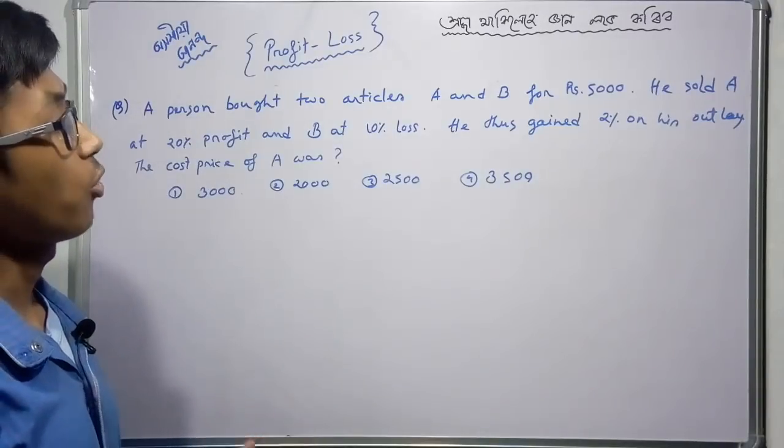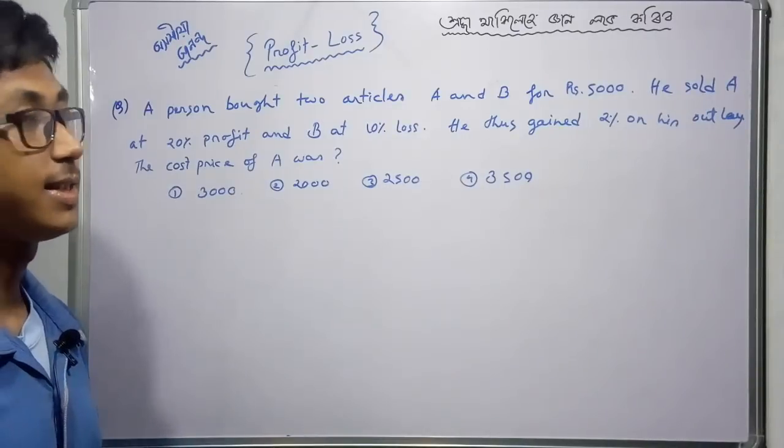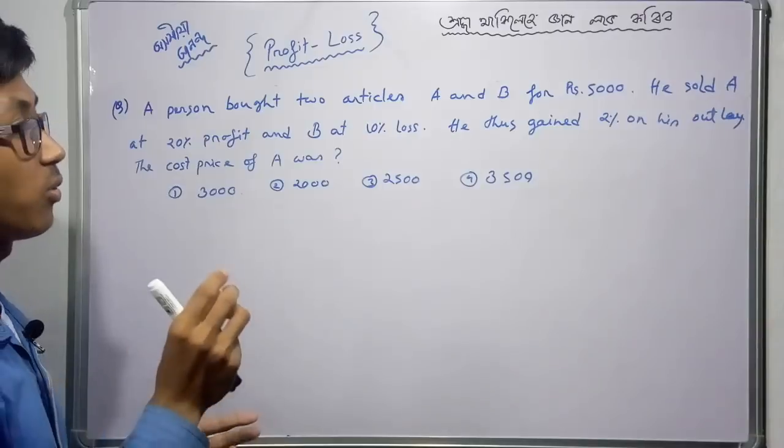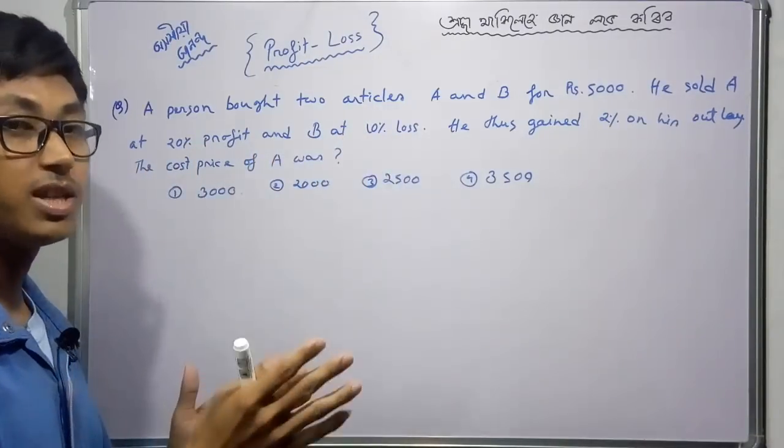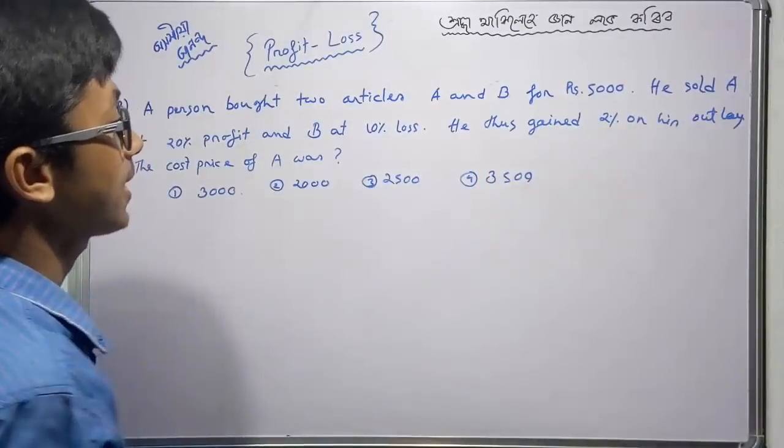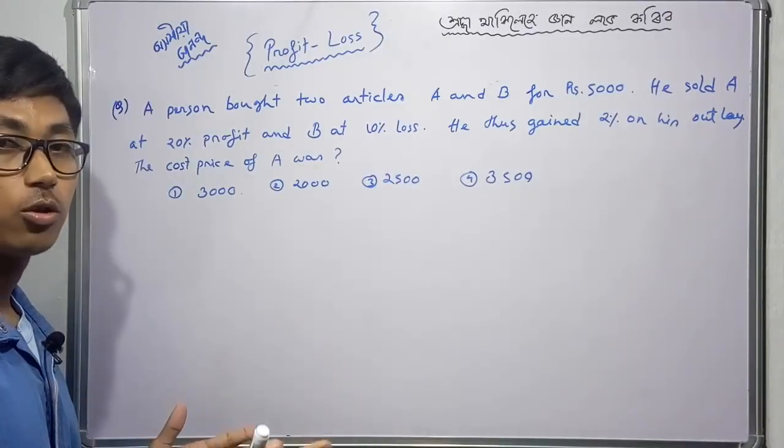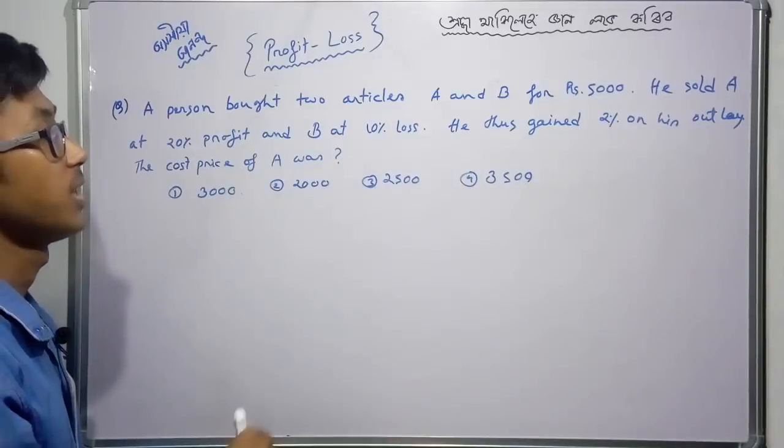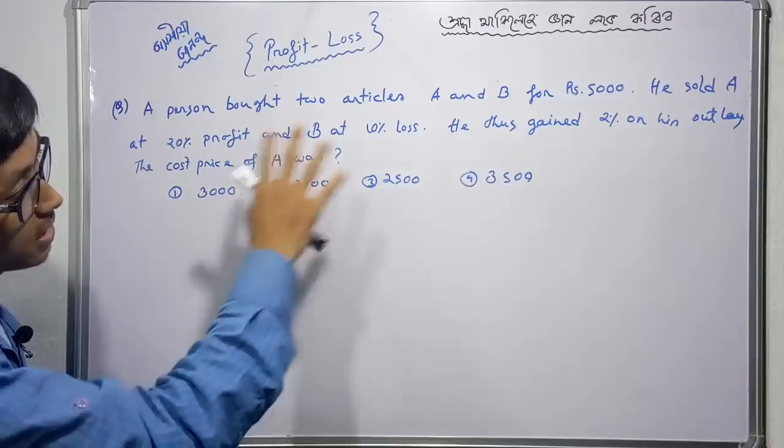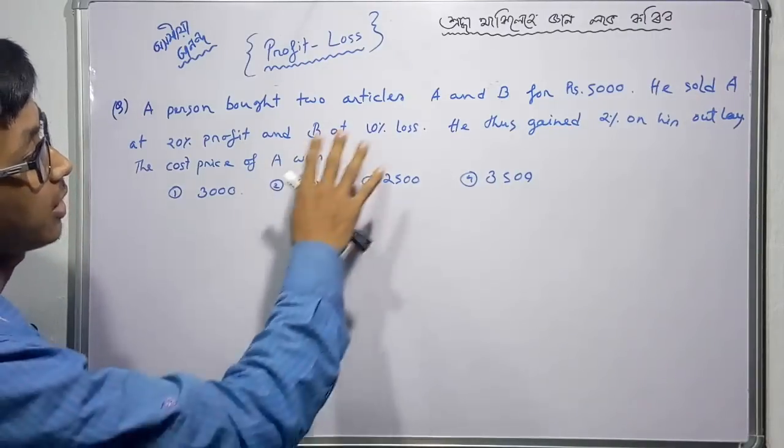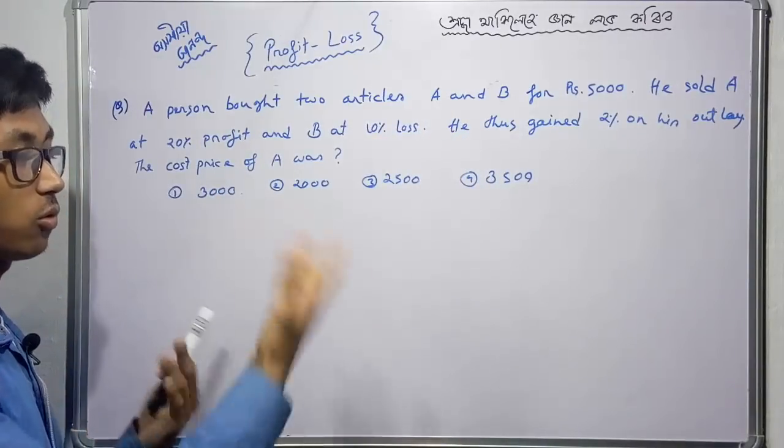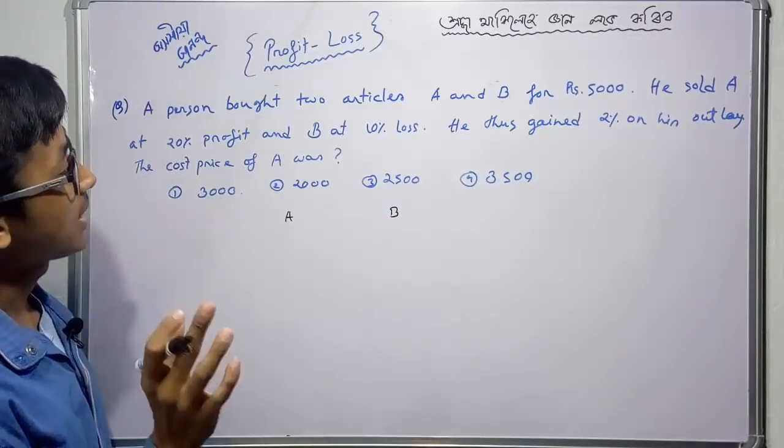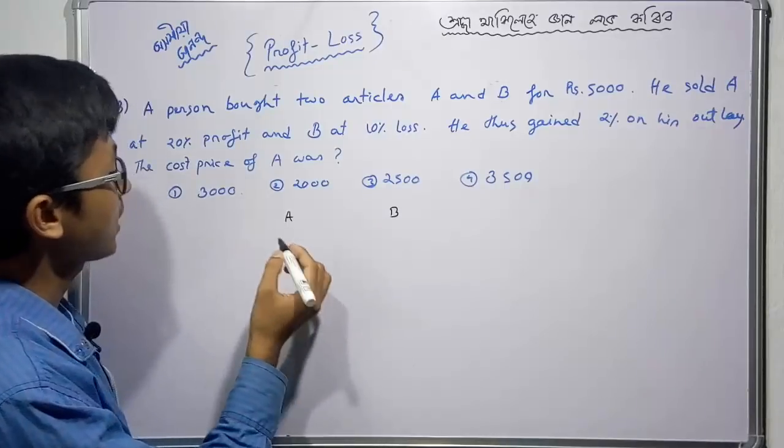A person bought two articles A and B for Rs. 5000. He sold A at 20% profit and B at 10% loss. He gained 2% on his outlay. Find the cost price of A. This is another ratio problem. A gives 20% profit, B gives 10% loss, but overall there's 2% gain.